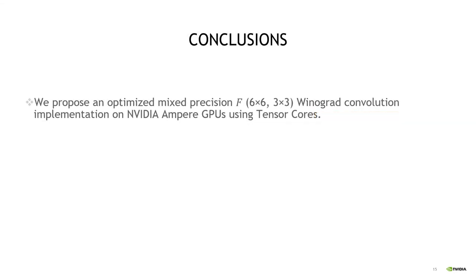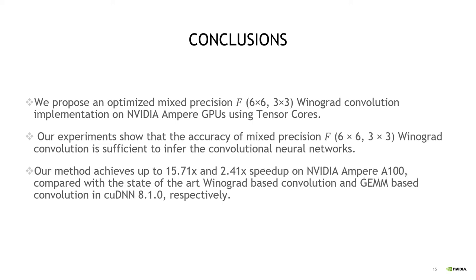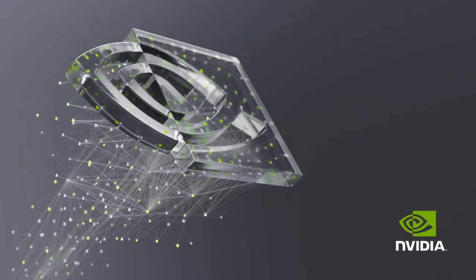Now I will finish my talk with conclusions. We propose an optimized mixed precision F6×6, 3×3 Winograd Convolution on NVIDIA Ampere GPUs using Tensor Cores. Our experiments show that the accuracy of mixed precision F6×6, 3×3 Winograd Convolution is sufficient to infer convolutional neural networks, and our method achieves good speedups on NVIDIA Ampere A100 compared with state-of-the-art implementations in cuDNN. Thanks for your time.